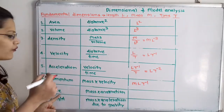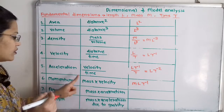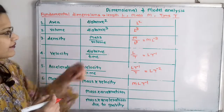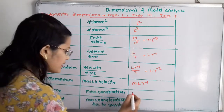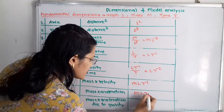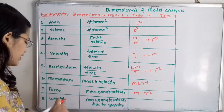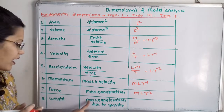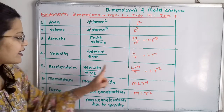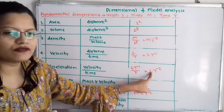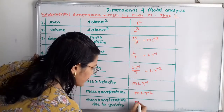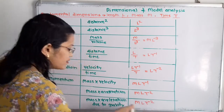Then force. Force is mass into acceleration. For acceleration it is T raised to minus 2 and for mass it is M, so I will write M into L into T raised to minus 2. Then weight — weight is mass into acceleration due to gravity, which also gives M into L into T raised to minus 2.